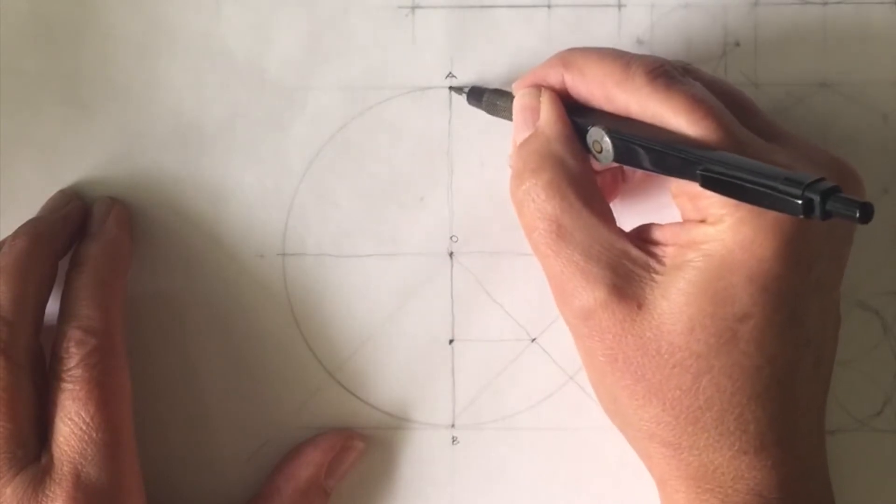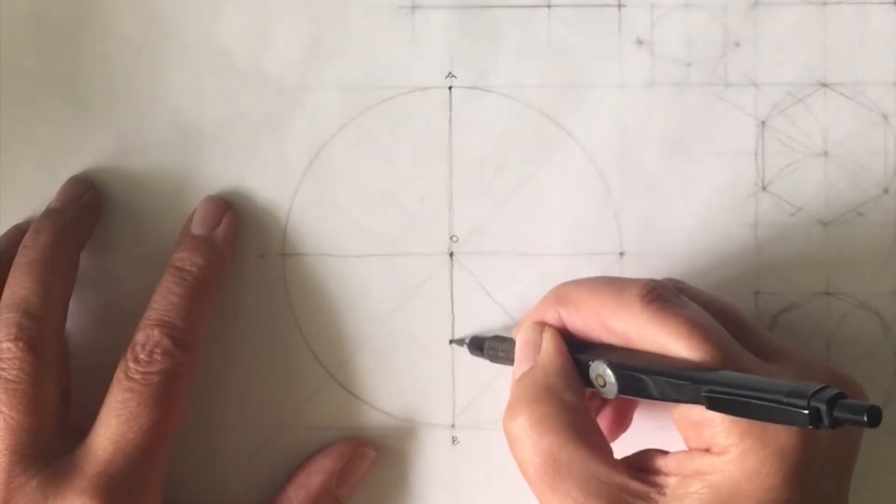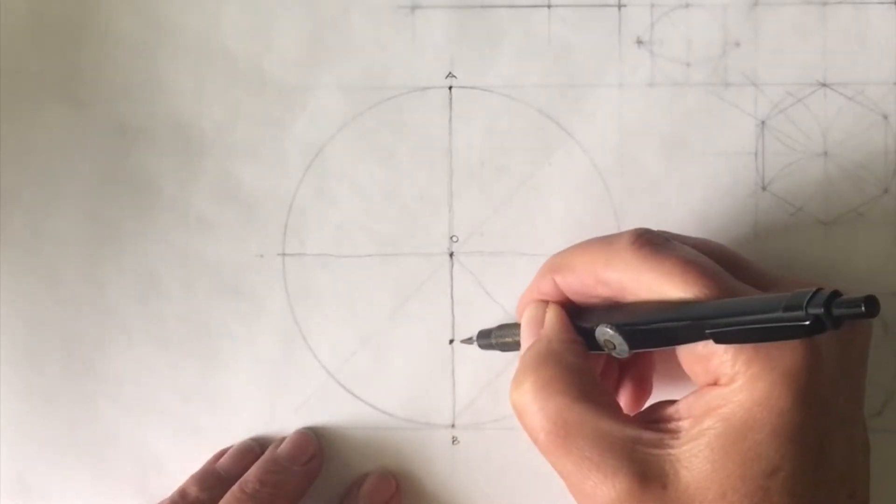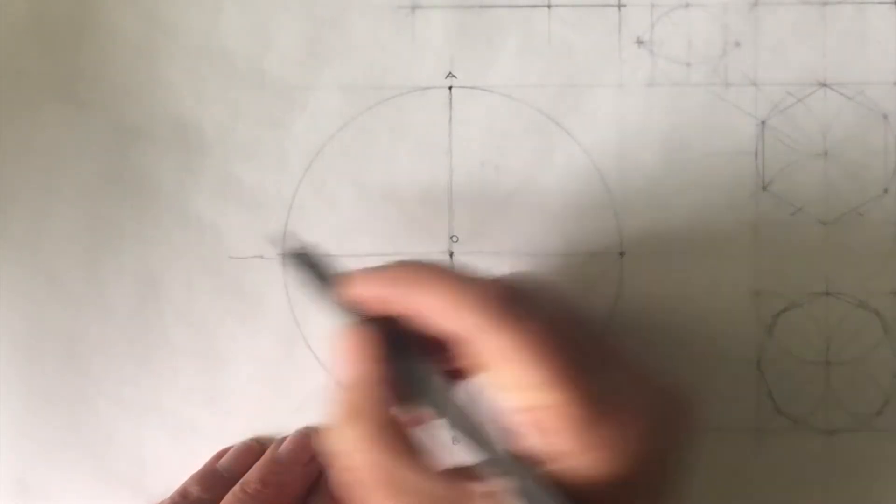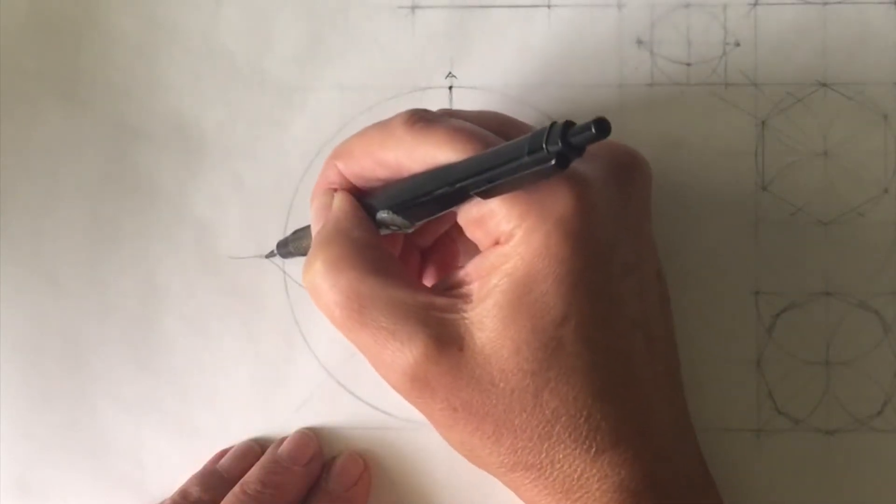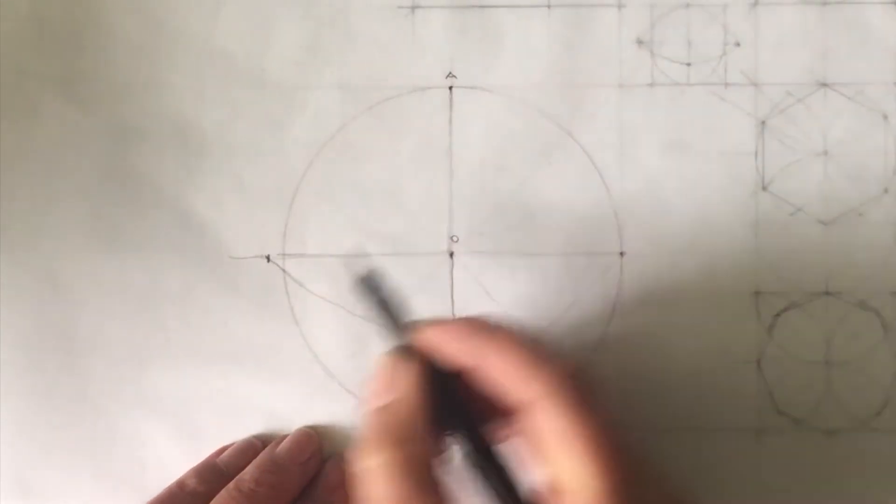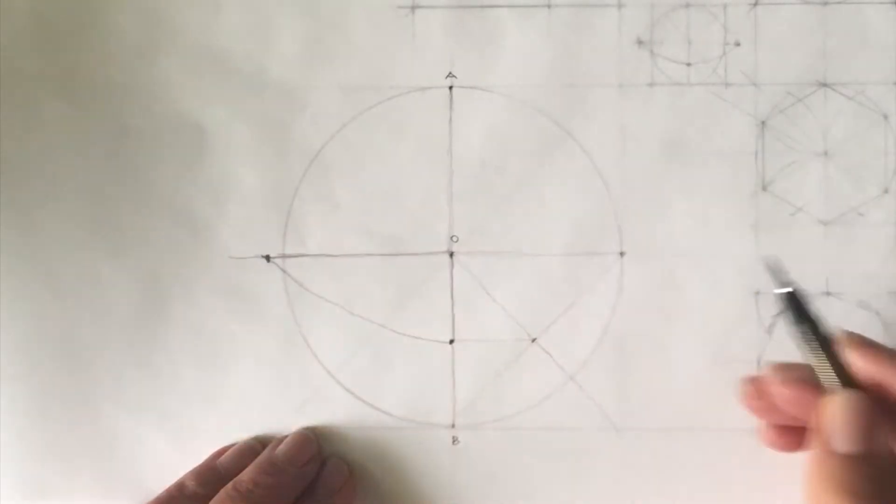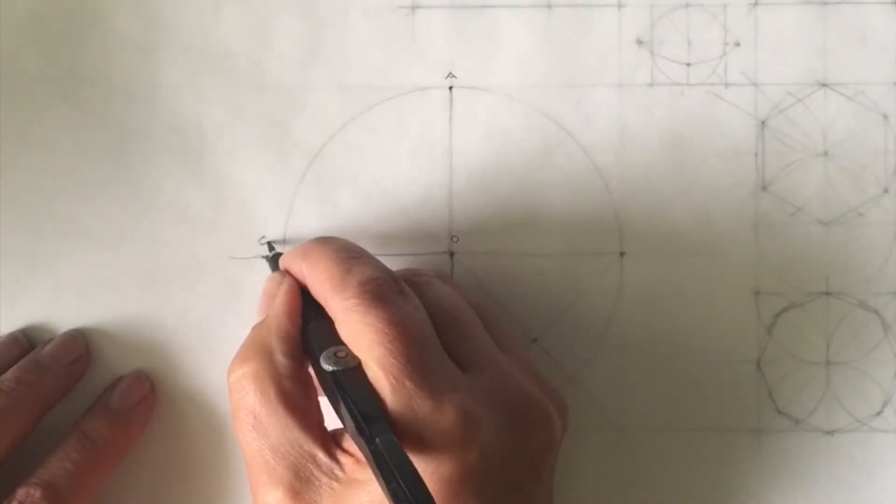So I'm going to put my compass point on that point there to there and then I will swing it around. So there's my radius and I'll swing it around that nice little arc there and it forms another point. It's odd. It's way out here. I'm going to call that point C.